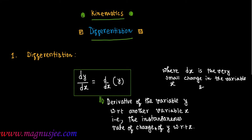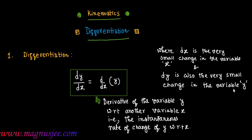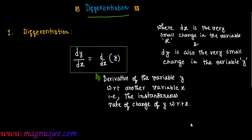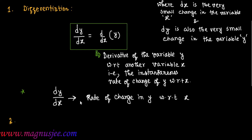dx is the very small change in the value of the variable x, and dy is also the very small change in the value of the variable y. So dy/dx, equal to d/dx of y, is the derivative of variable y with respect to variable x. dy/dx is the rate of change of the value of y with respect to x. Number 2 topic: we have to know different formulae in connection with differentiation.